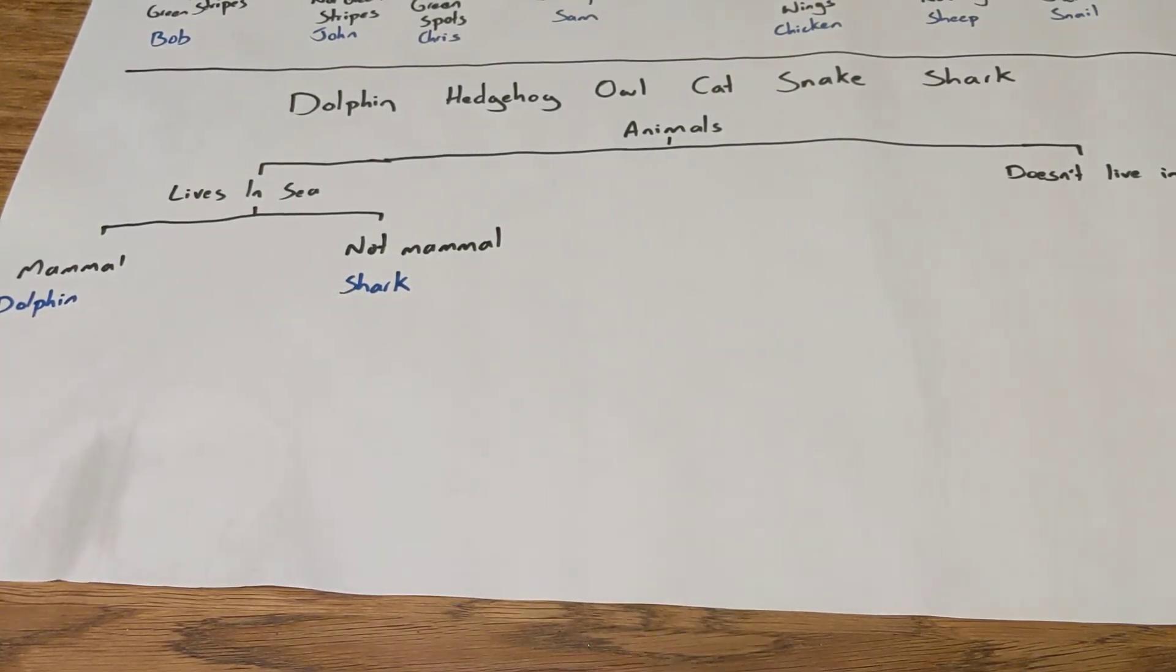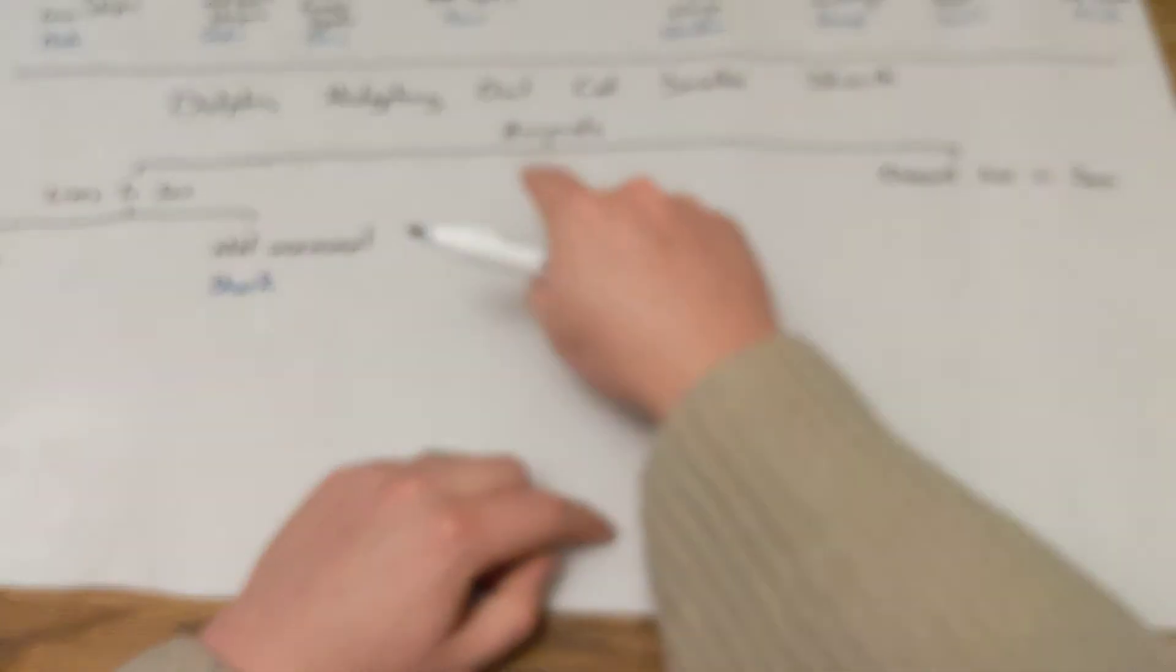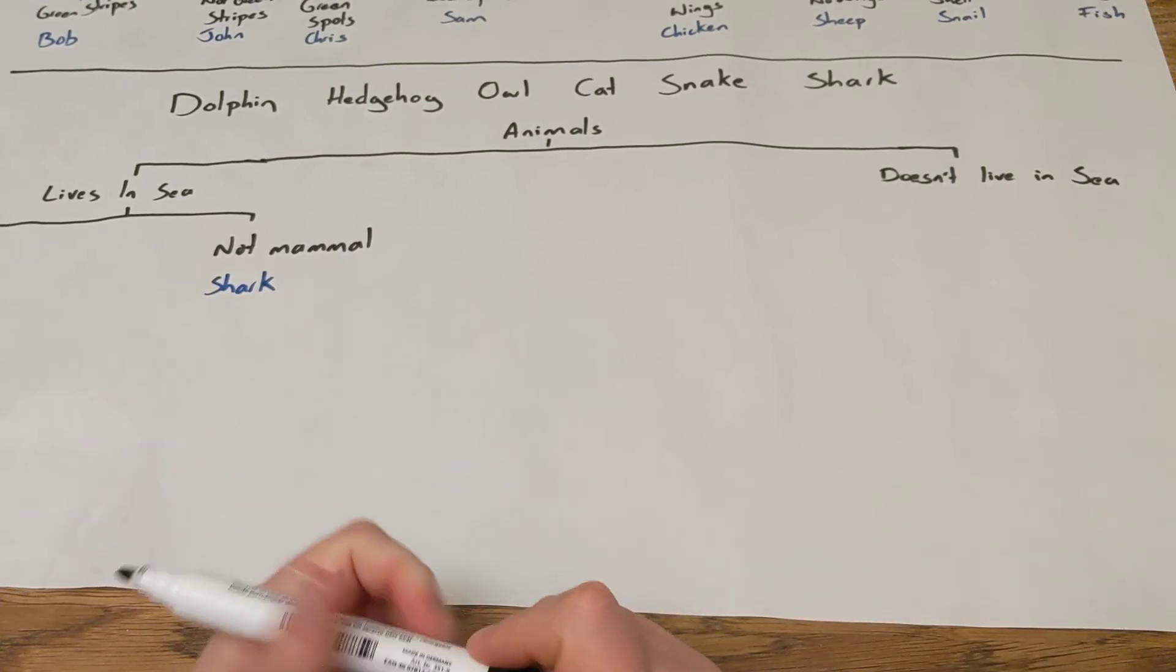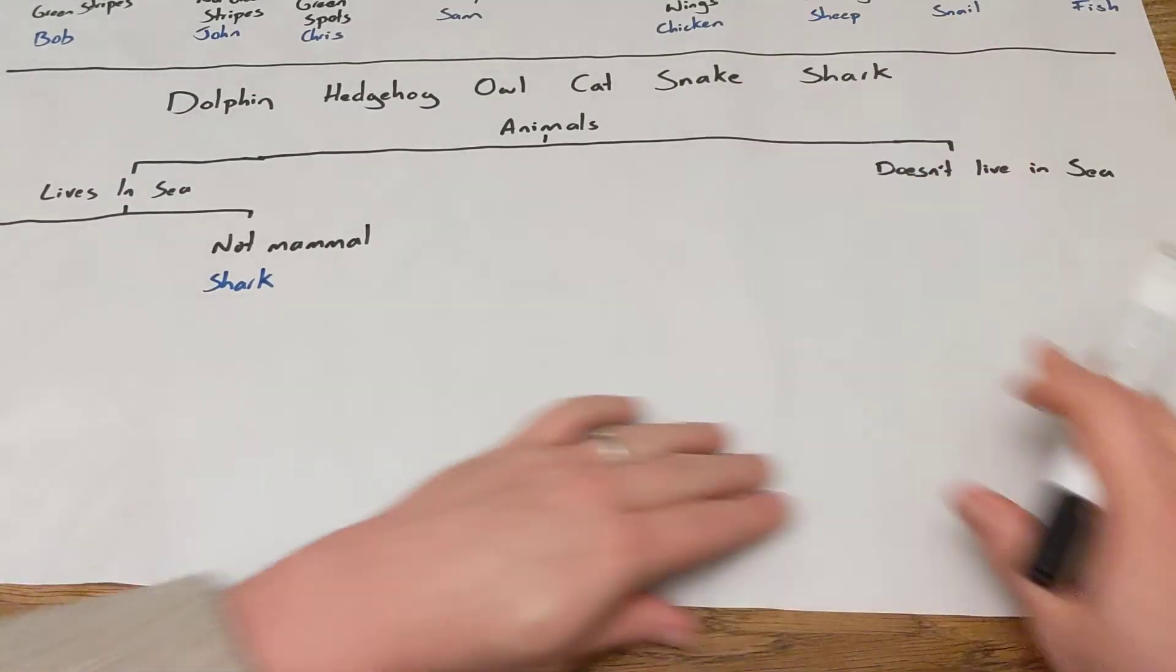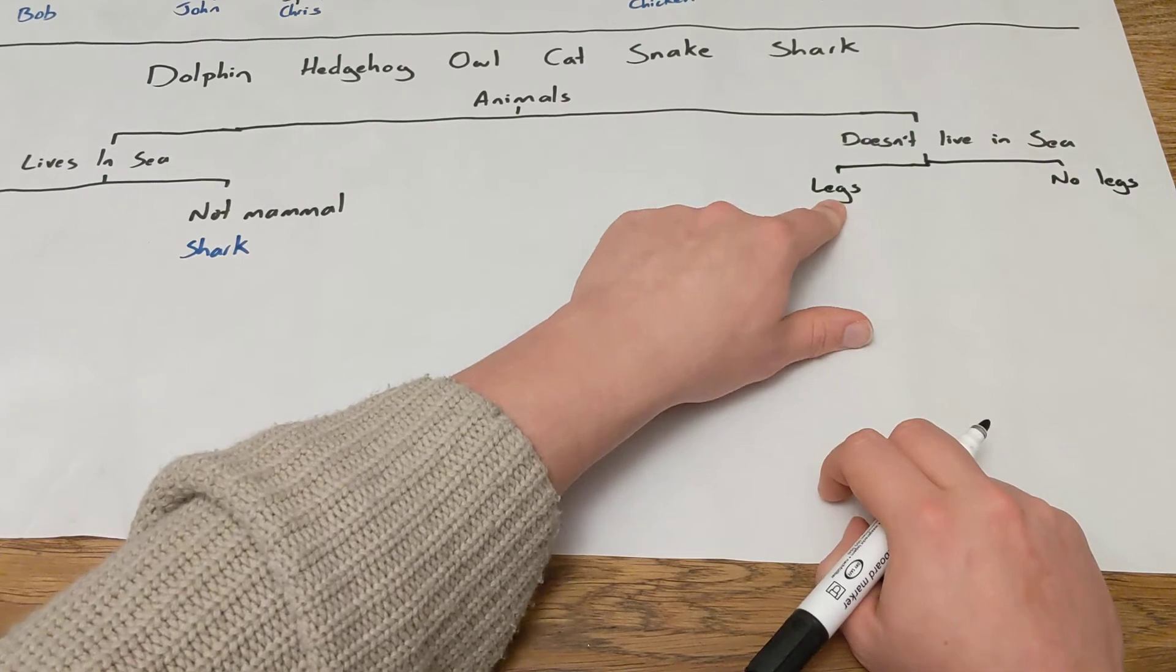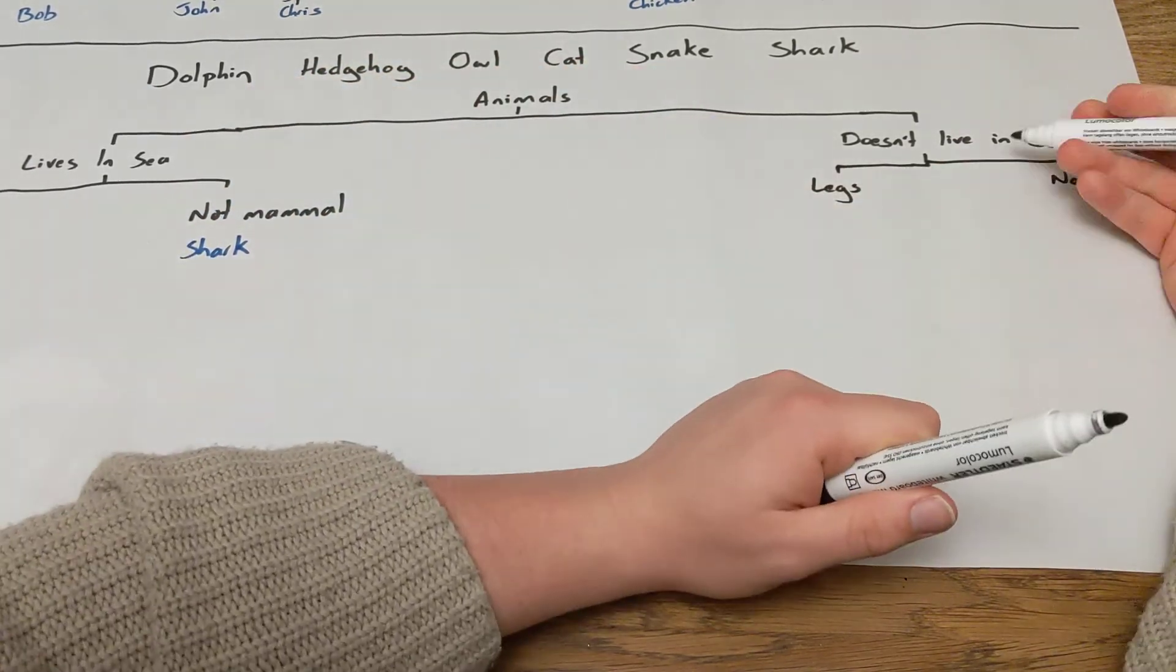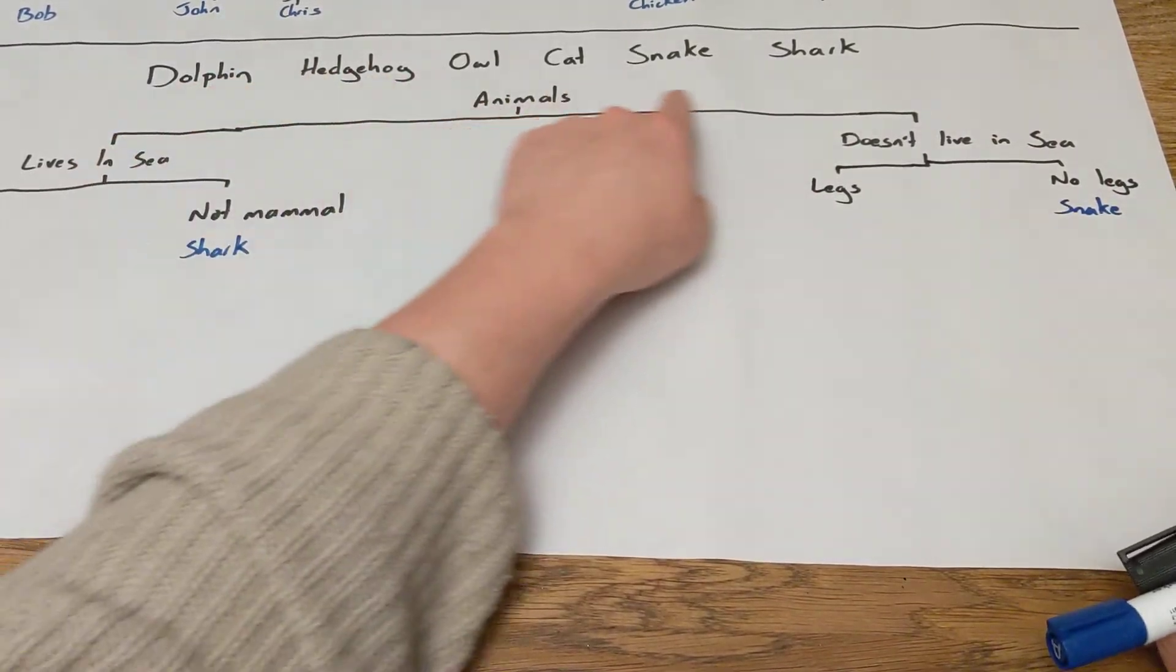So then we need to think about the other animals we've got left. So we've still got four to go. We've still got hedgehog, owl, cat, and snake. What could we think of to split them up? Well, let's do one you've seen before. Let's go for legs and no legs. So legs, well that still leaves hedgehog, owl, cat. So we're going to need more branches here. But no legs, well that only leaves snake. So we can write snake there. Because if someone has got this far, if they've gone as far as doesn't live in the sea, and it's got no legs, the only option there that fits that is snake.